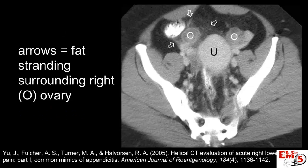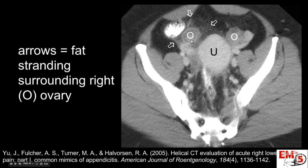This last patient is a female having some suprapubic and right-sided lower quadrant pain. We're cued in by all this fat stranding around it. We see a circular structure, but there's one on both sides and there's a uterus right here — we're really low in the pelvis. This is not an appendix; this is actually an ovary, and this is a diagnosis of PID.